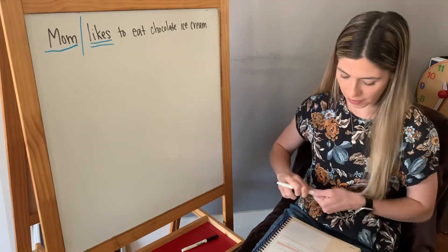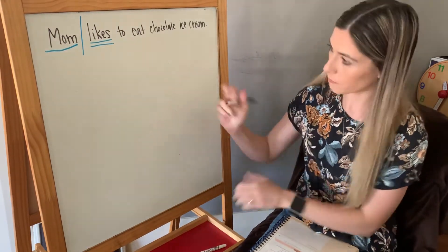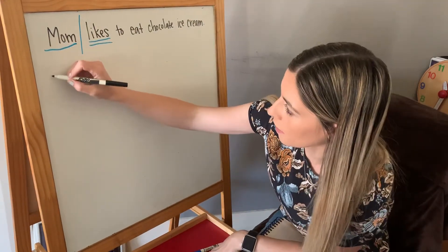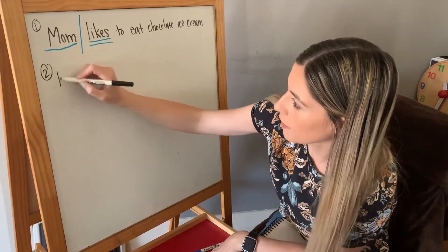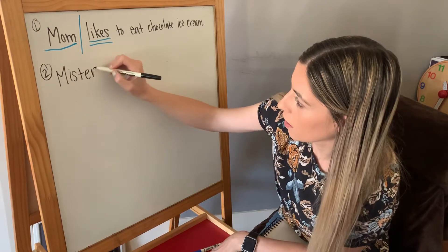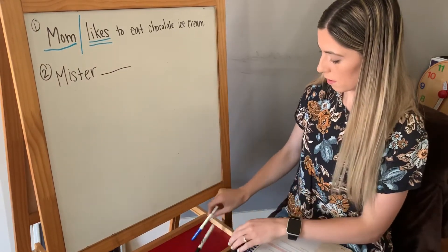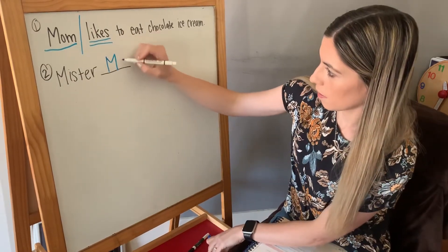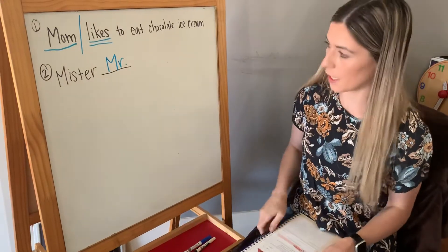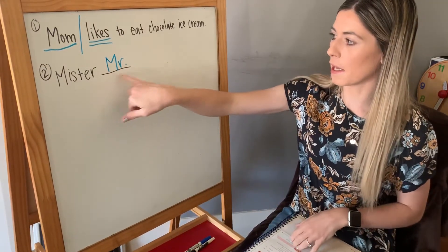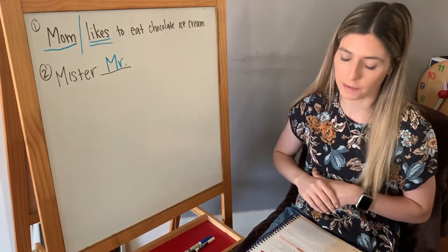Section two says write the abbreviation for each word. I'm going to do one for you that's not on here. If it said mister, I would write Mr. The two important things about abbreviations: they have capital letters and they have periods at the end. Don't forget those things. They're very important when it comes to abbreviations.